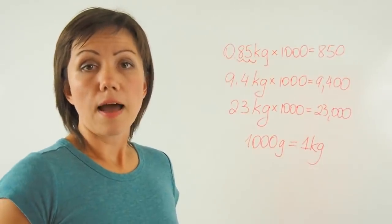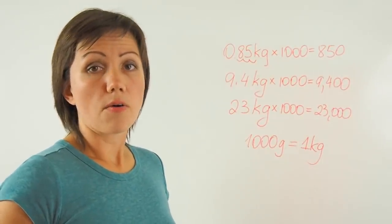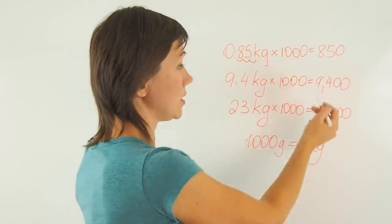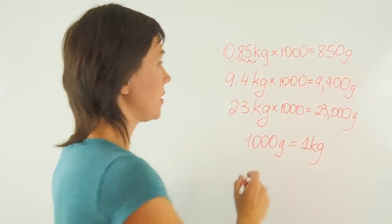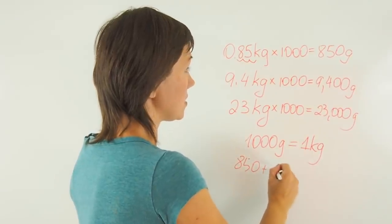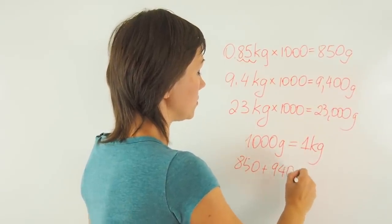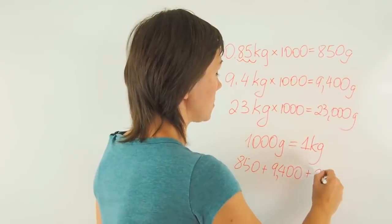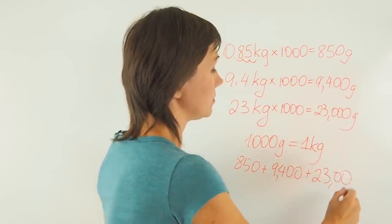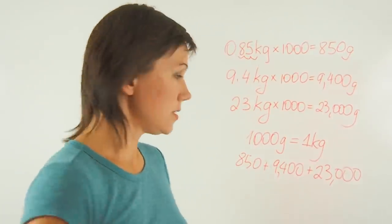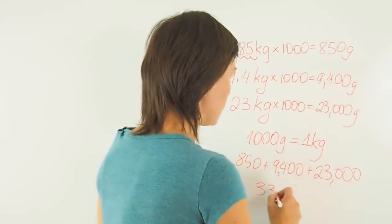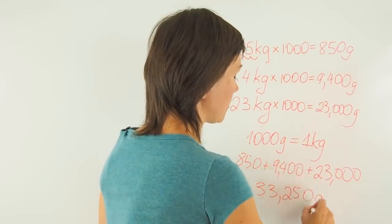Total means adding it all together. So now I need to add all of these masses in grams together. 850 plus 9,400 plus 23,000. So the answer here is 33,250 grams.